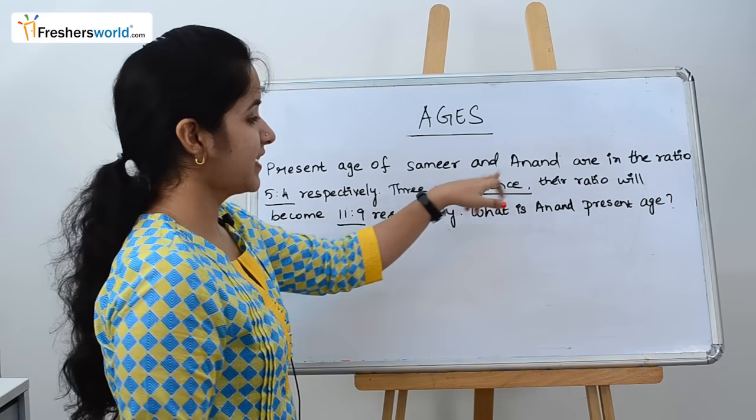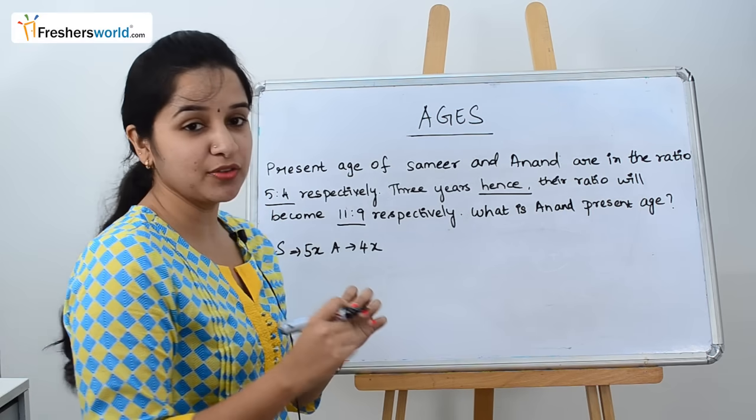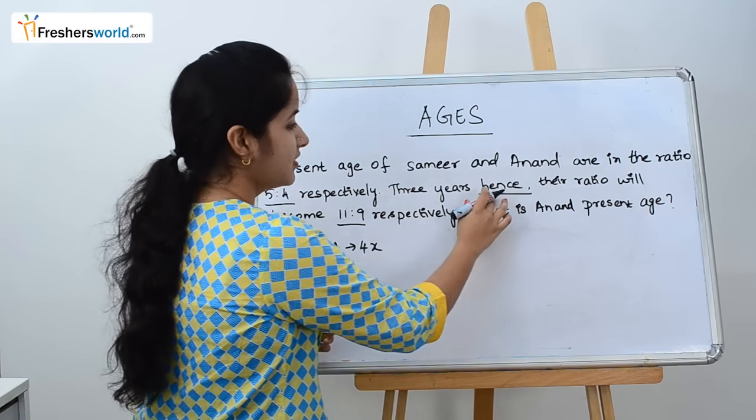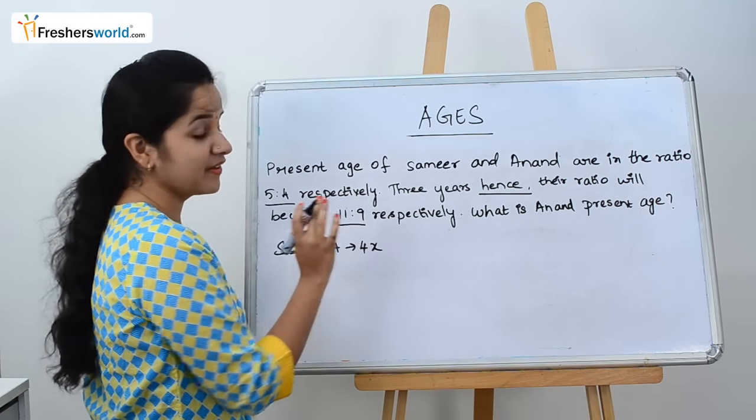What have they given? 3 years hence. Hence we know we have to add it because it's future age. They're telling after 3 years their ratio will become 11 is to 9.